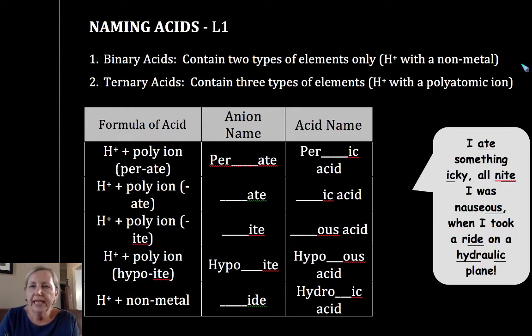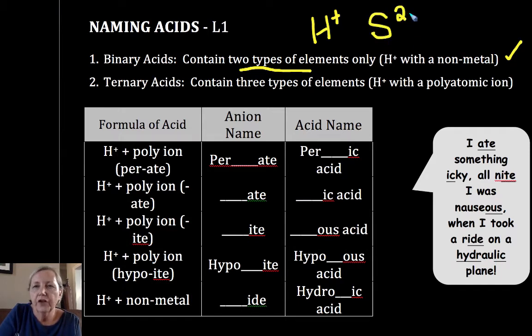Now we can talk about acids in two broad classes. One is a binary acid, and that contains two types of elements. It's just a hydrogen ion with a nonmetal anion such as sulfur or sulfide. So that binary acid would be H2S.